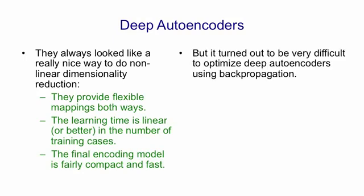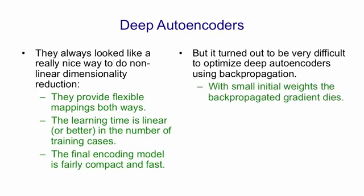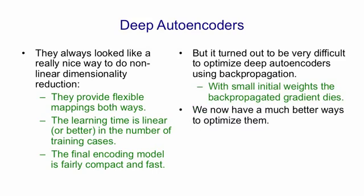Unfortunately, it was very difficult to optimize deep autoencoders using backpropagation. Typically people tried small initial weights, and then the backpropagated gradient died. So for deep networks, they never got off the ground.